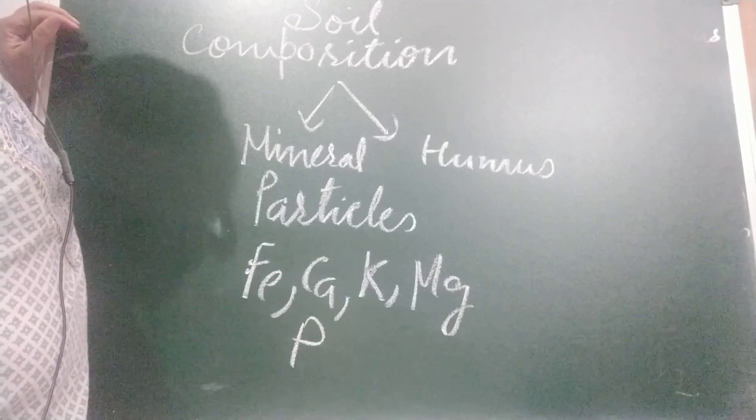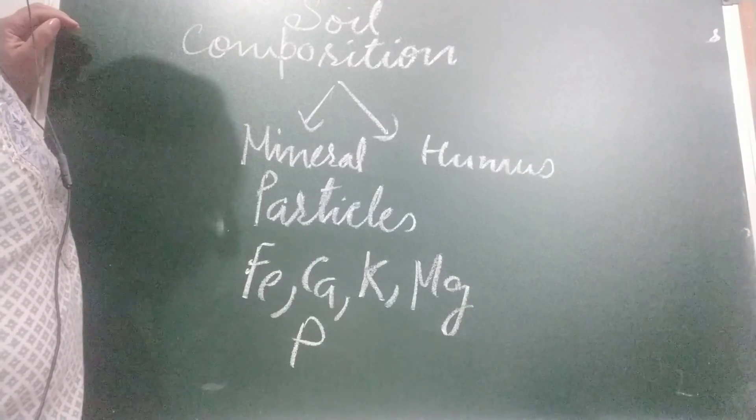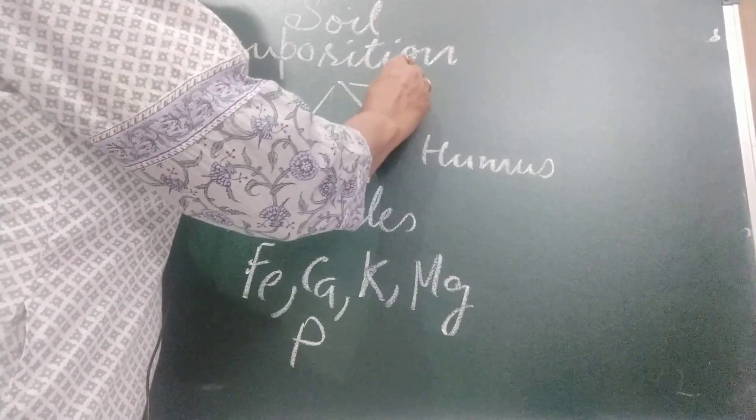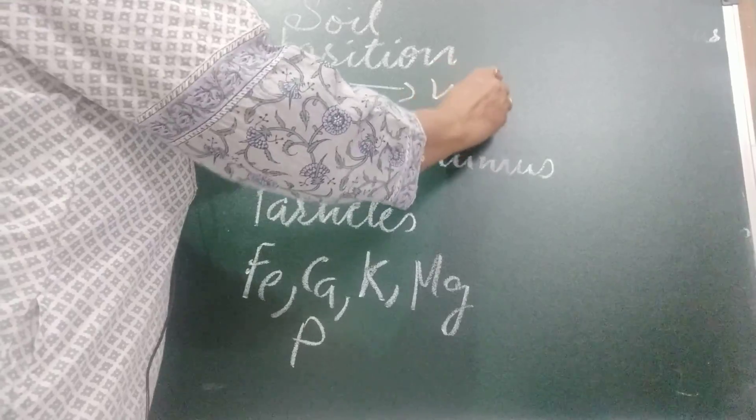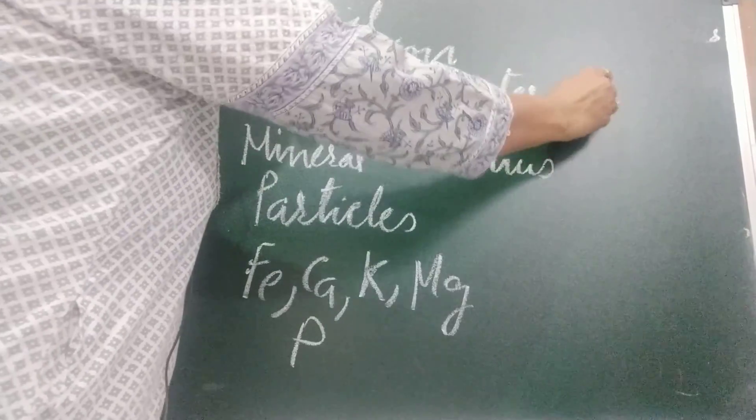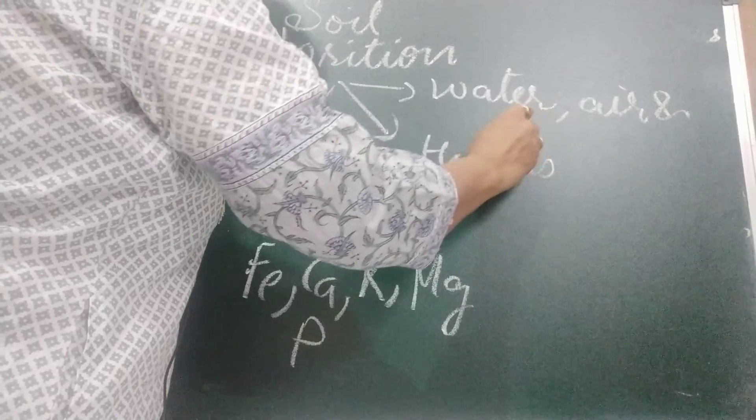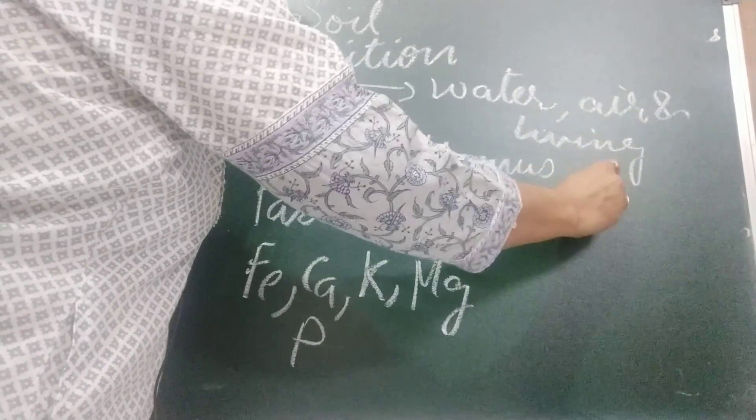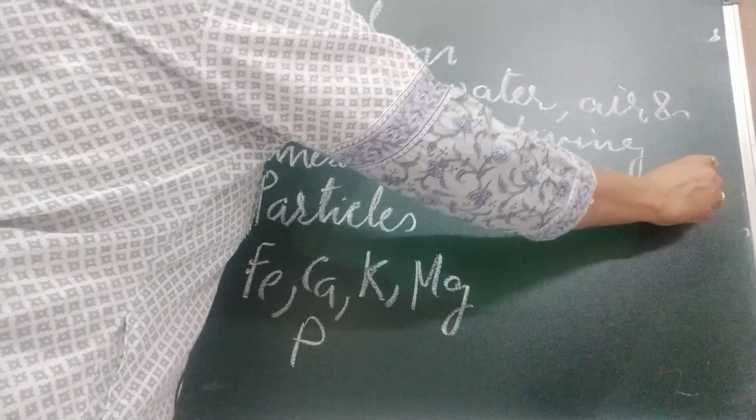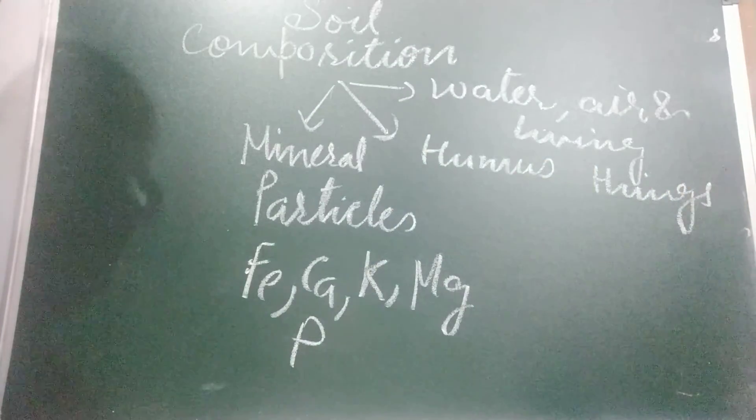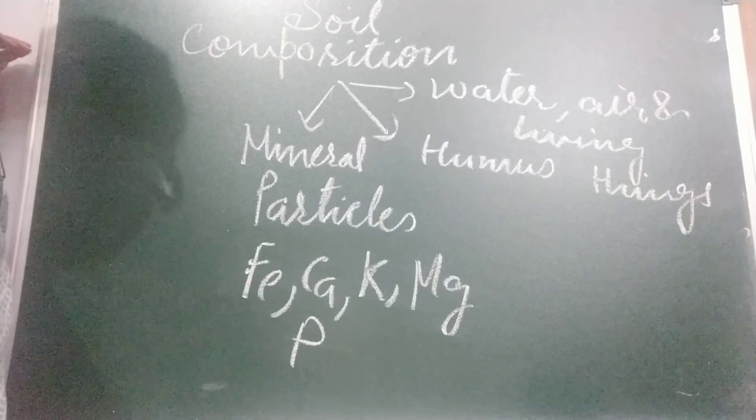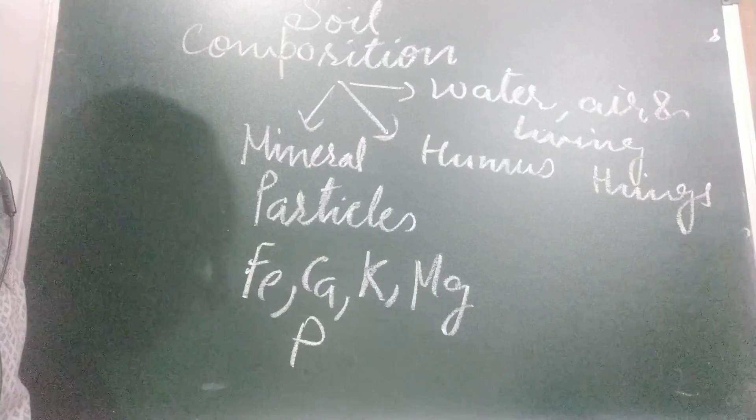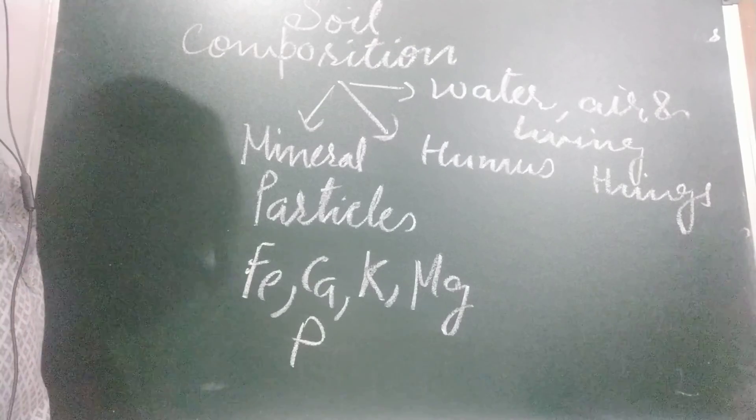Apart from these two things, soil also contain water, air and living organisms. Water, air and living things. Living things means small creatures. Water and air are needed for soil organisms to survive and for dead and decaying matter to be converted to humus.